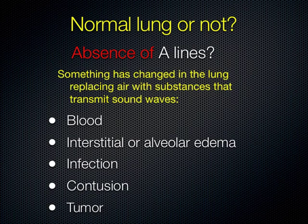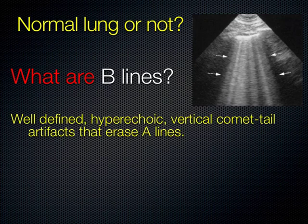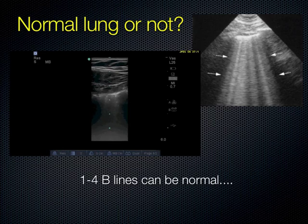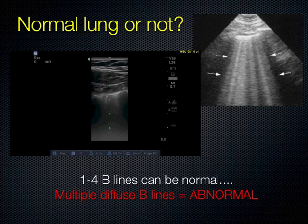Now, what are B lines? B lines are actually vertical artifacts that erase the A lines. The normal aerated lung has A lines, but if you have B lines, these are artifacts created by fluid in the lung that will obliterate the A lines. You can have a couple of these vertical comet tails that are normal — up to three or four — but if you have multiple diffuse B lines in multiple fields, that is abnormal. That is fluid that has overtaken the air in the lung.